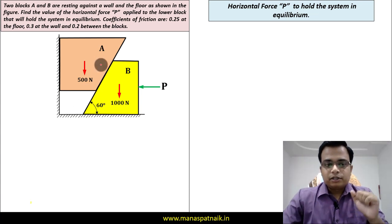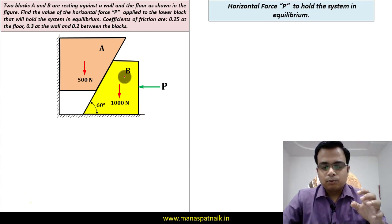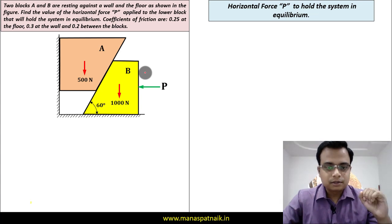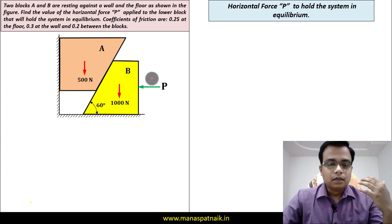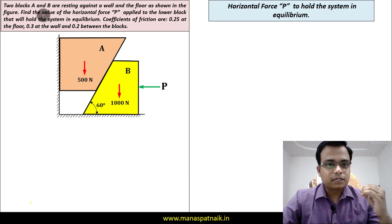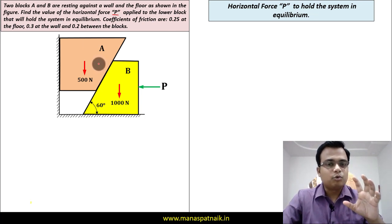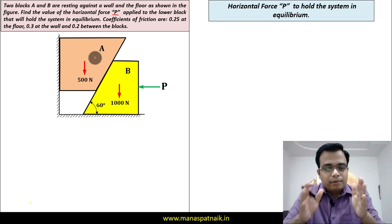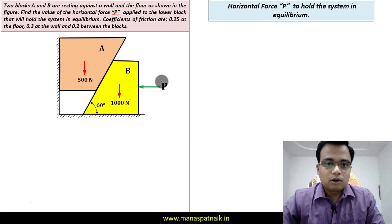Looking at these two blocks, their natural tendencies: block A will have a natural tendency to move slightly downwards, and in that case block B will slide towards the right hand side. But nothing of that sort is going to happen because we are going to apply a constant force P to prevent that from happening.